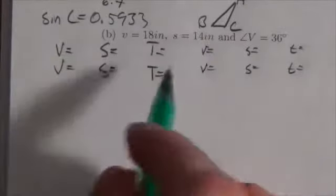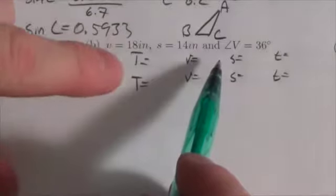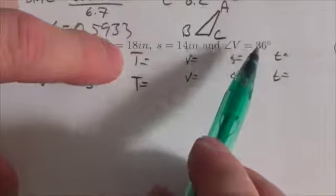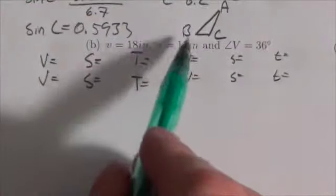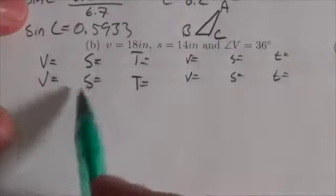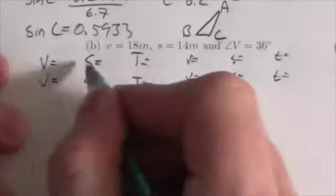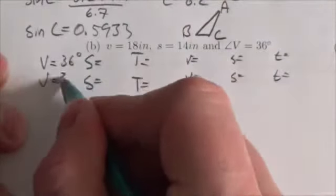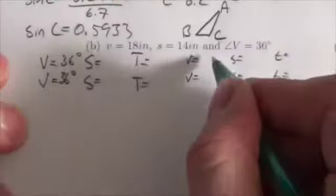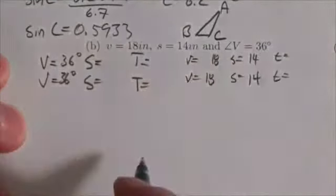First of all, notice that in the information that we're given here, I do have the angle and the side opposite it with V. Angle V and little v. And then I've got side S, which means the only thing right now that I can solve for is big S. Actually, it would probably make more sense right now if I was to fill in everything that I've got. I know that regardless of what we're doing here, angle V is 36. I know that little v is 18, and little s is 14.